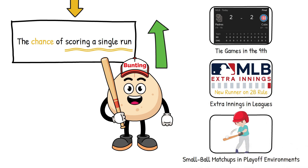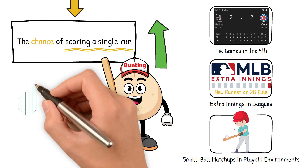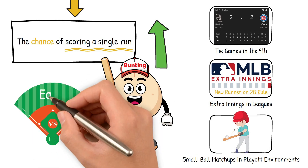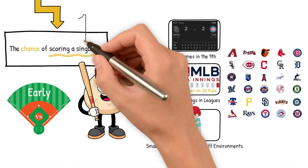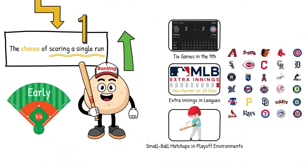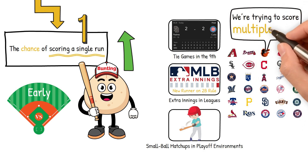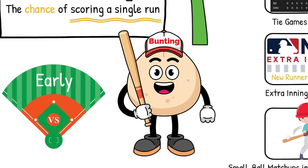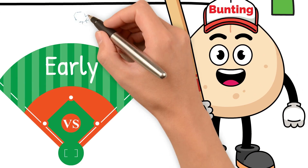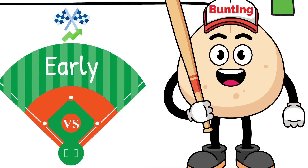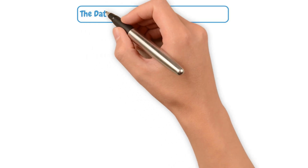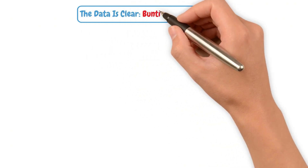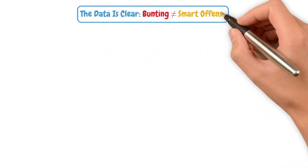But in most cases, especially early in games, teams aren't just trying to score one run — they're trying to score multiple runs. And bunting statistically kills rallies. The data is clear: bunting does not equate to smart offense.